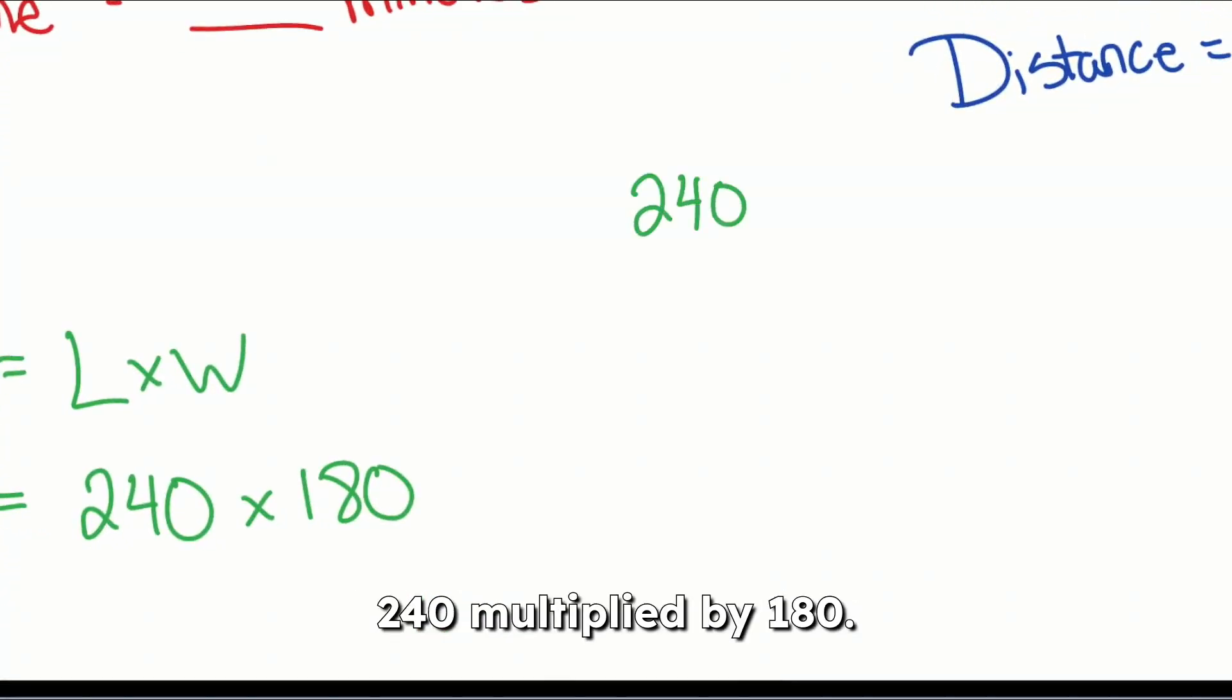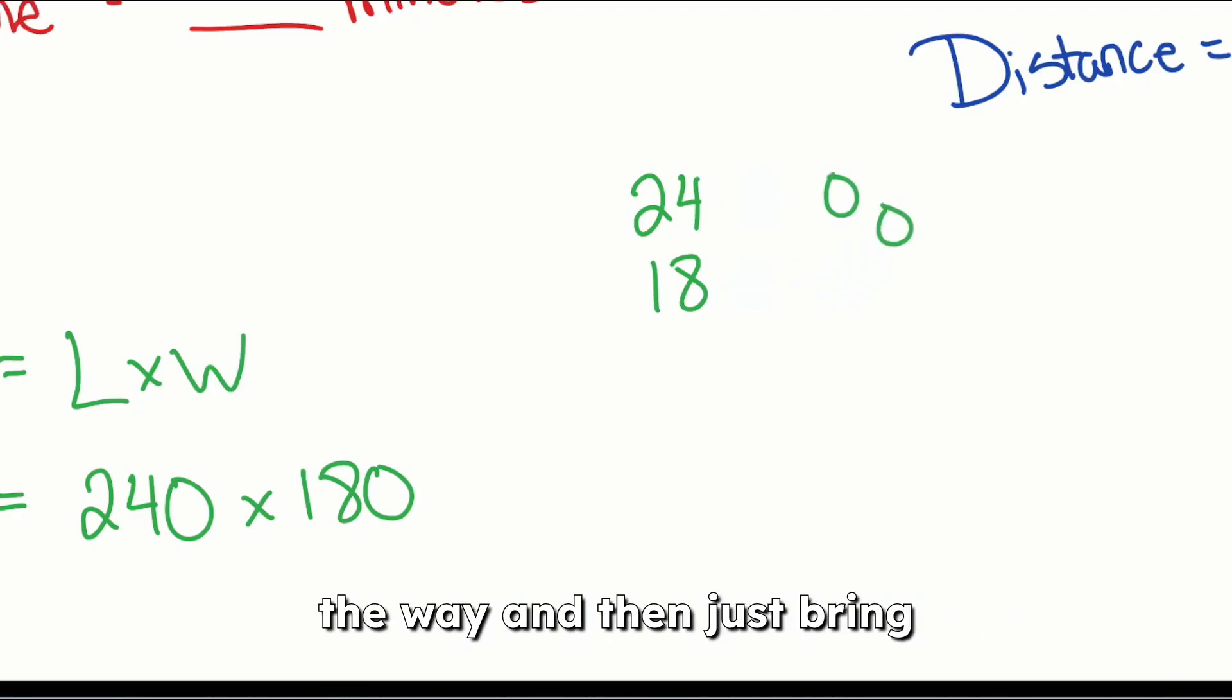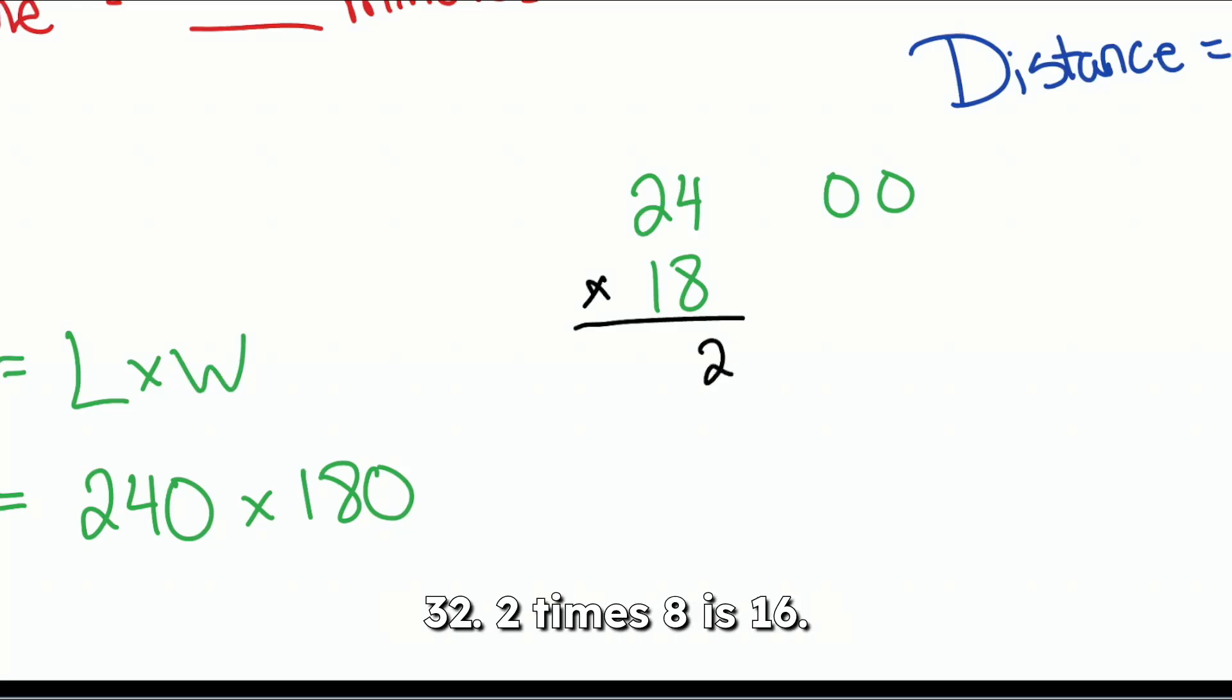240 multiplied by 180. And I'll actually give you a nice hint here to speed this up. We can take these zeros out of the way and then just bring them back at the end. Let's just do 24 times 18 and bring those zeros back at the end. So 4 times 8, 32. 2 times 8 is 16. Carry the 3 is 19.